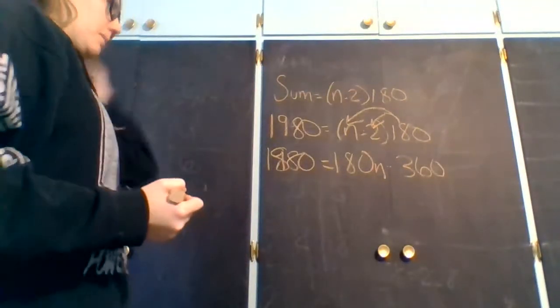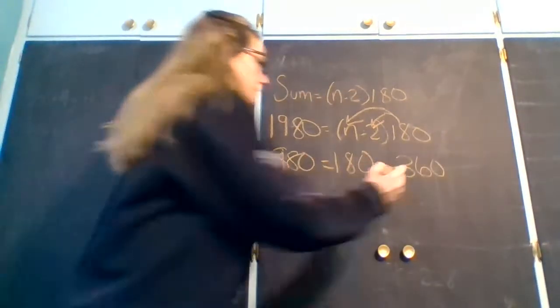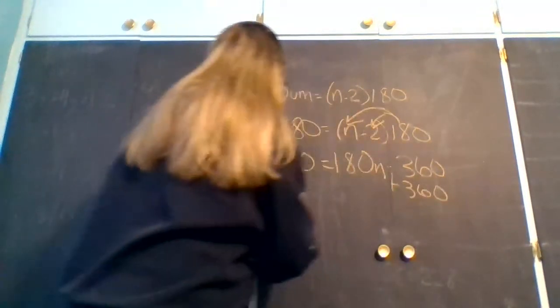Again, basic multi-step equation here, where I need to get n by itself, do the opposite.